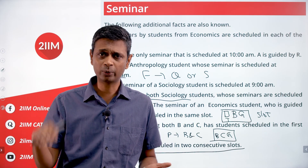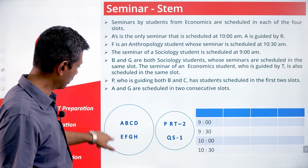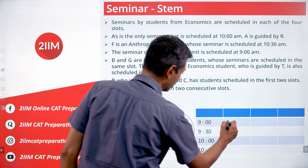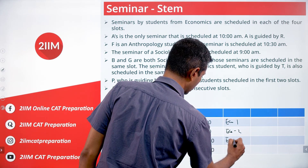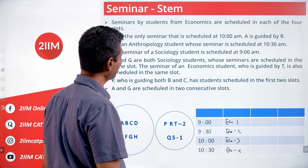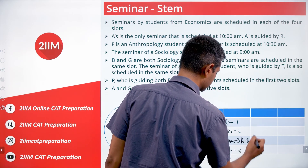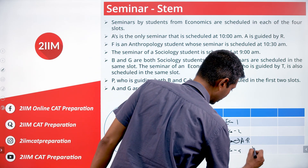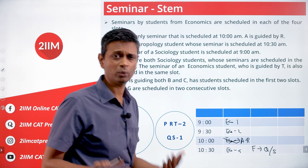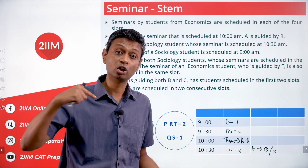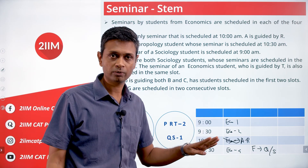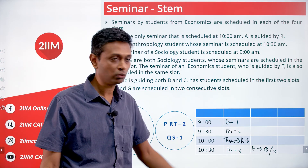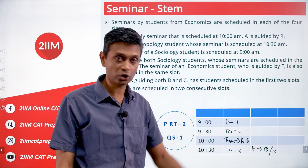There is a lot of information here. We are going to get one complete grid. Economics students are scheduled in each of the four slots: economics 1, 2, 3, 4. A is the only one at 10am, scheduled by R. A is an economics student, so R is an economics professor. F is an anthropology student guided by Q or S. The other one of Q and S will guide a sociology student.